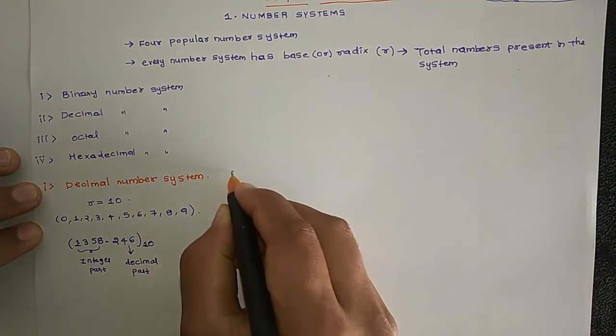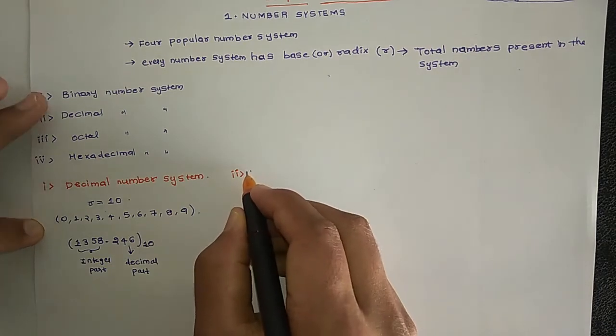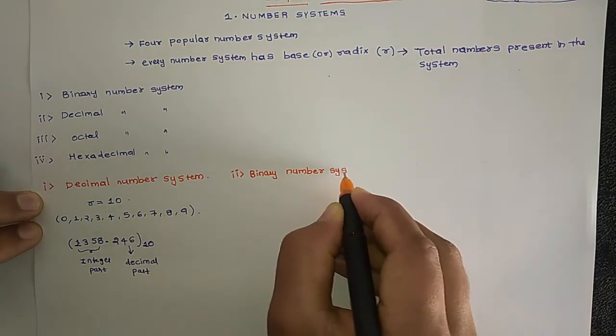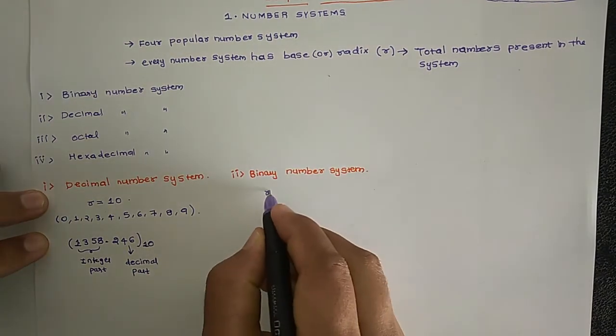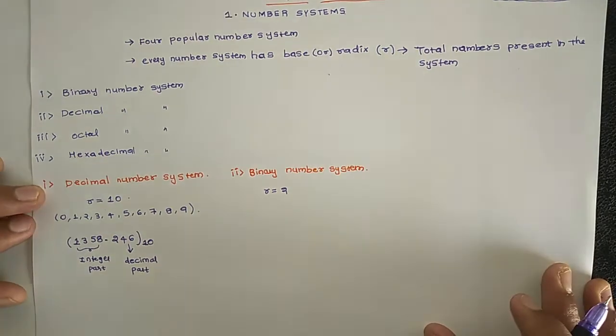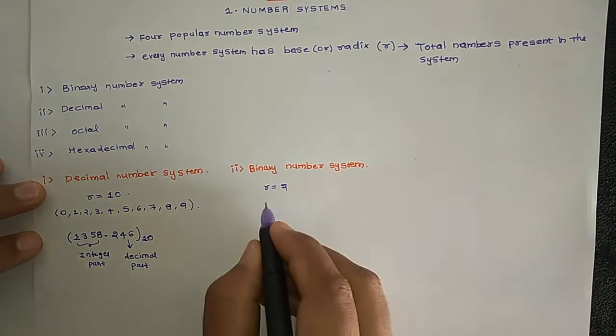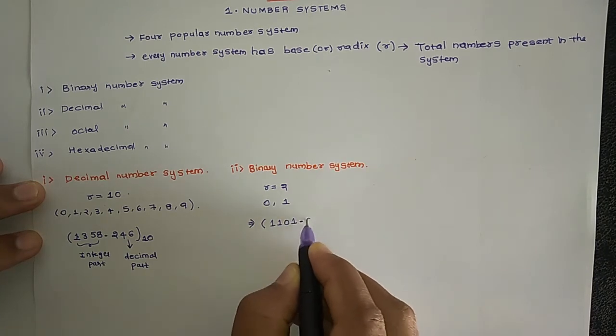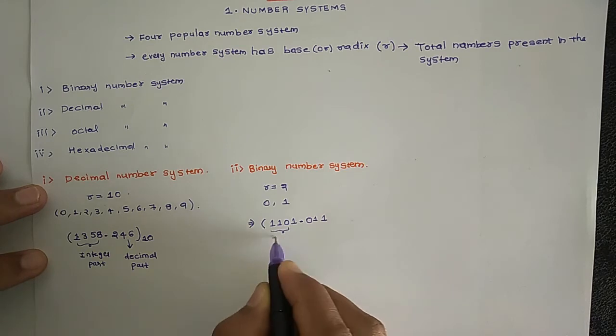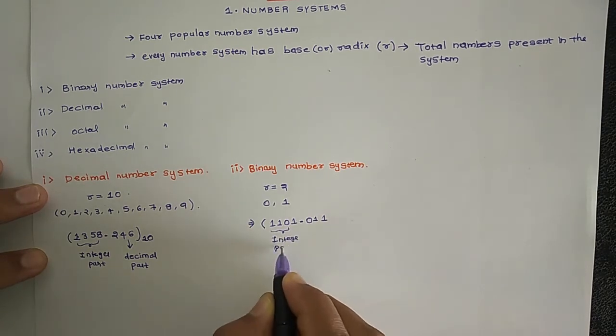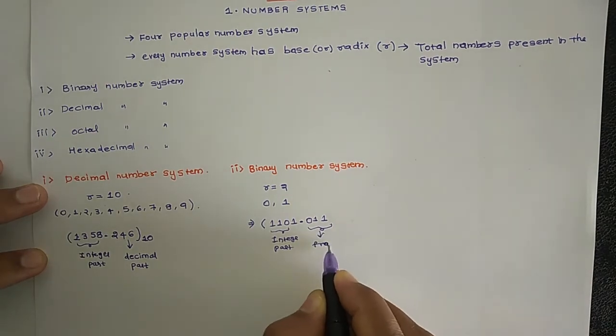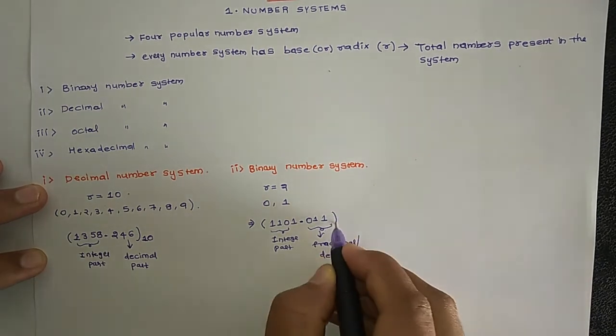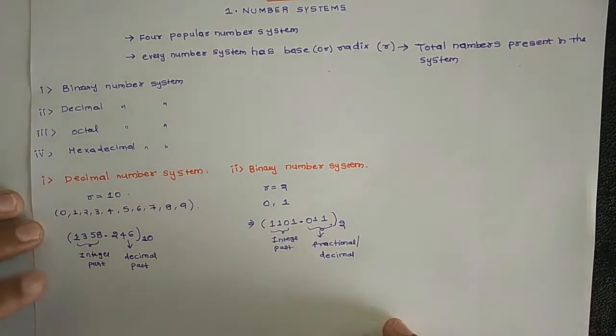The second number system is Binary number system. Binary number system has radix 2. That means there are only two different numbers: 0 and 1. For example, 1101.011. This is integer part, and this is fractional part or decimal part. It is also called fractional or decimal. And it is represented by base 2. Since radix is 2, we represent it with subscript 2.